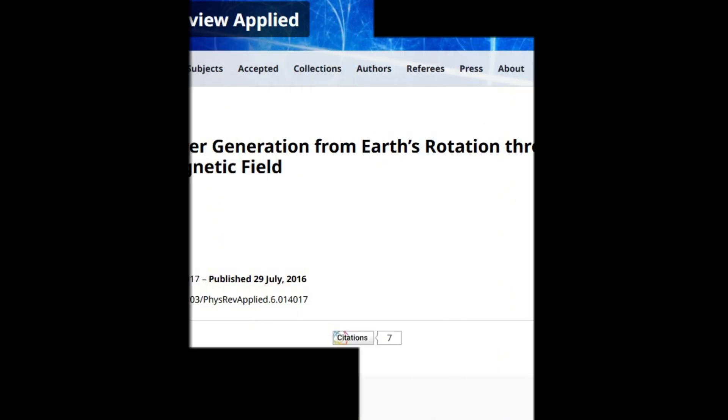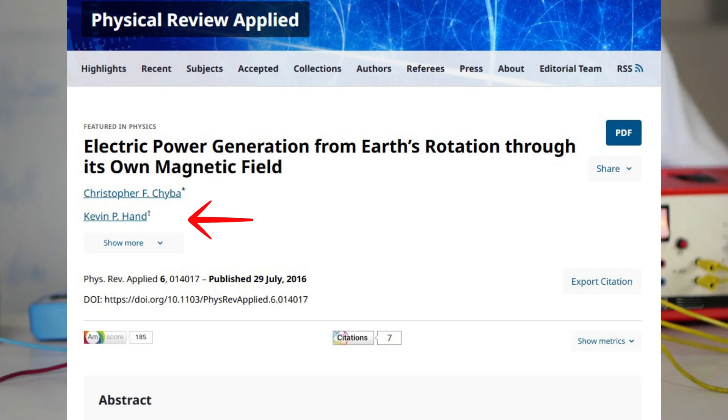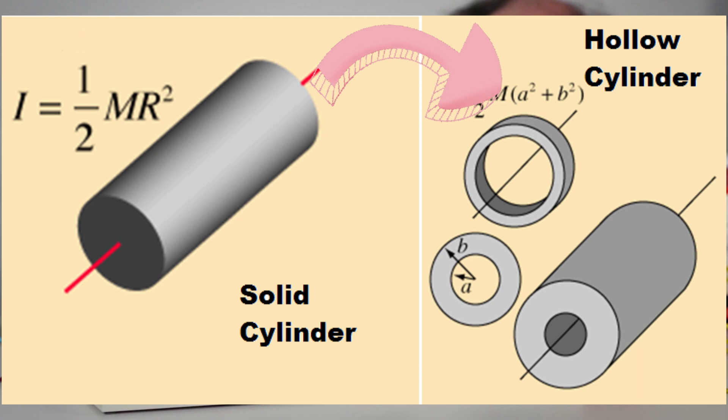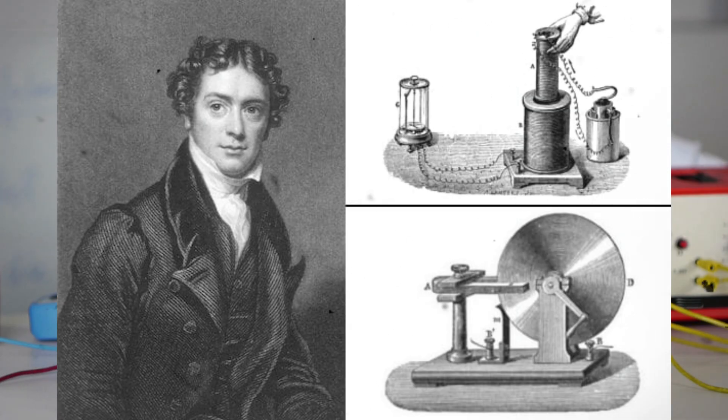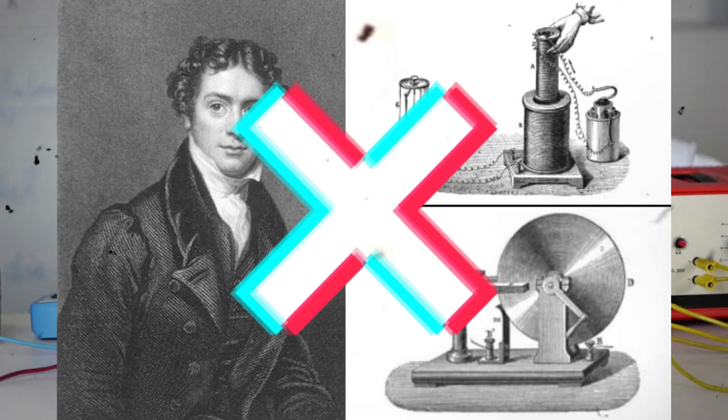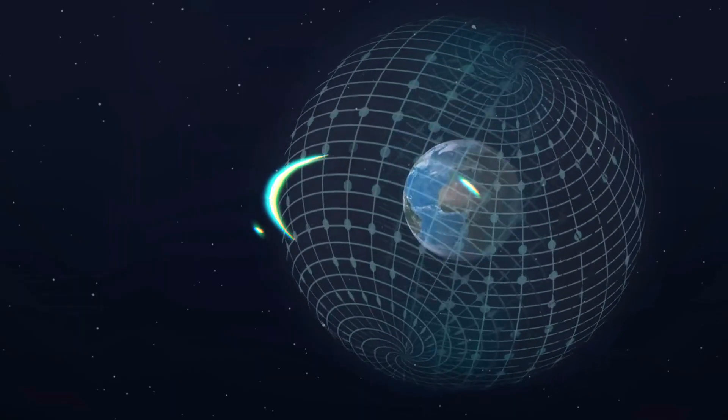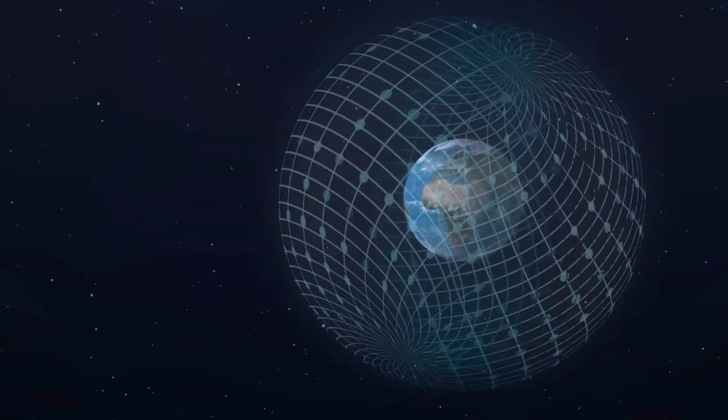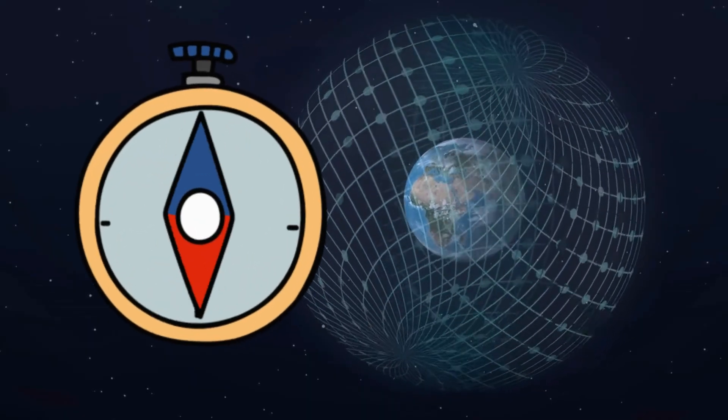In 2016, Chiba and Hand published a controversial theoretical paper showing that if you use a hollow conducting shell instead of a solid one, the assumptions in Faraday's argument no longer apply. Under the right conditions, Earth's rotation should induce a measurable electromotive force.